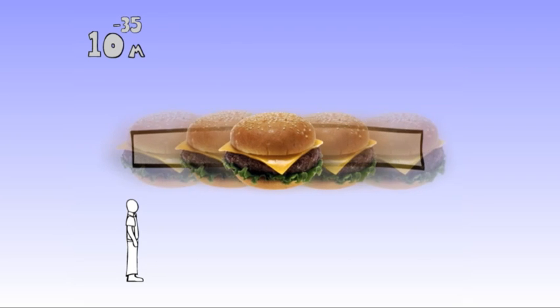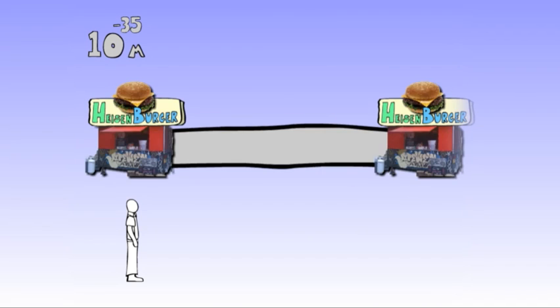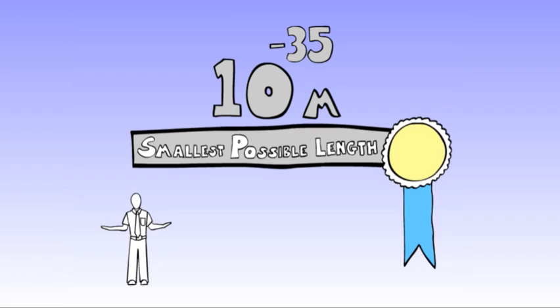According to some theories, when you get down to this scale, the uncertainty principle makes it impossible to tell whether a particle is here or there. And if there's no way to tell the difference between one location and another, they might as well be the same place. Which means that as far as we know, 10 to the negative 35th meters is the smallest possible length there is.